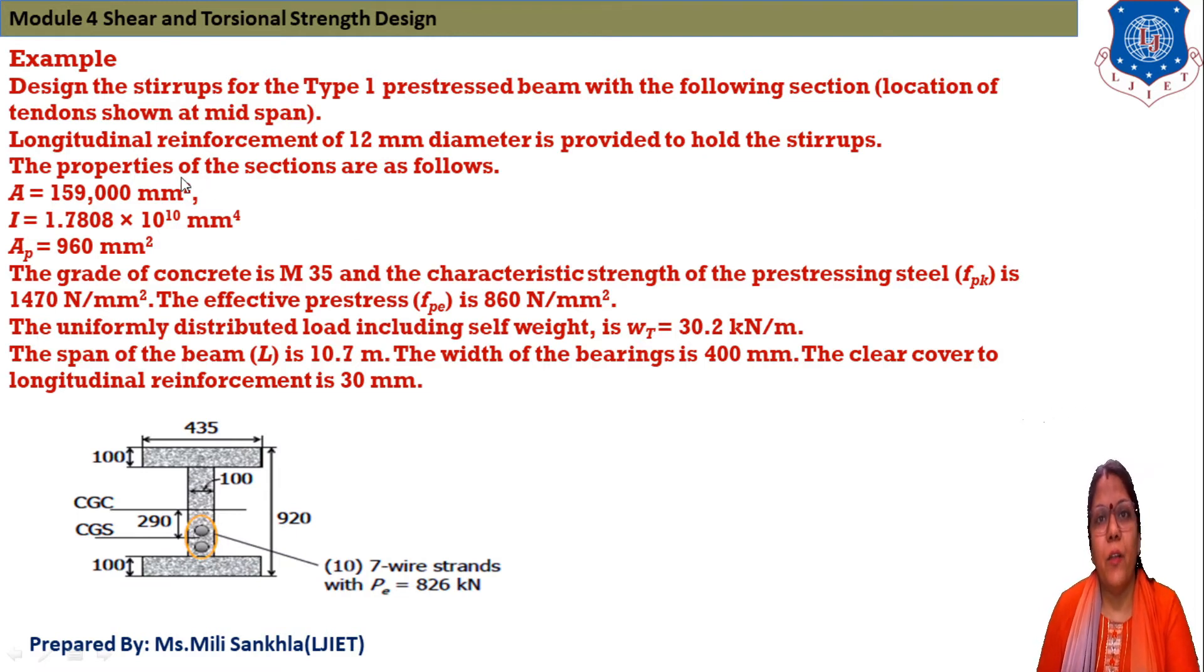Now we see the second example. Read the data: Design the stirrups for Type 1 prestressed beam with following section. Location of tendon is given in figure. Longitudinal reinforcement of 12 mm diameter is provided to hold the stirrups. The properties of sections are given: area equals 159,000 mm², I equals 1.780 × 10¹⁰ mm⁴.